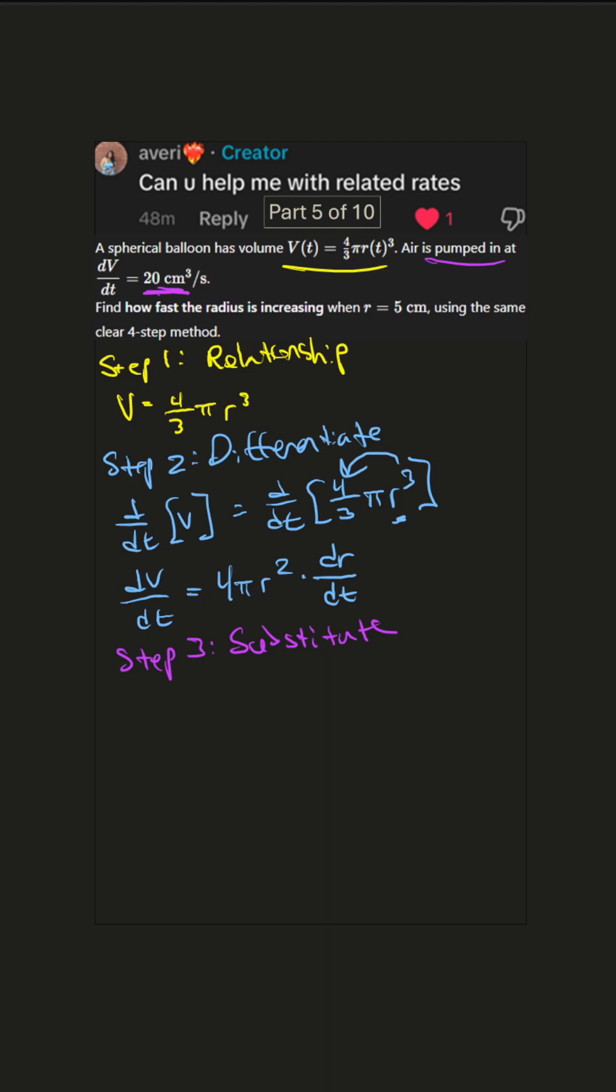Okay, step 4: solve. So we're going to solve where r equals 5. So 20 equals 4 pi r is 5, so 5 squared dr dt.